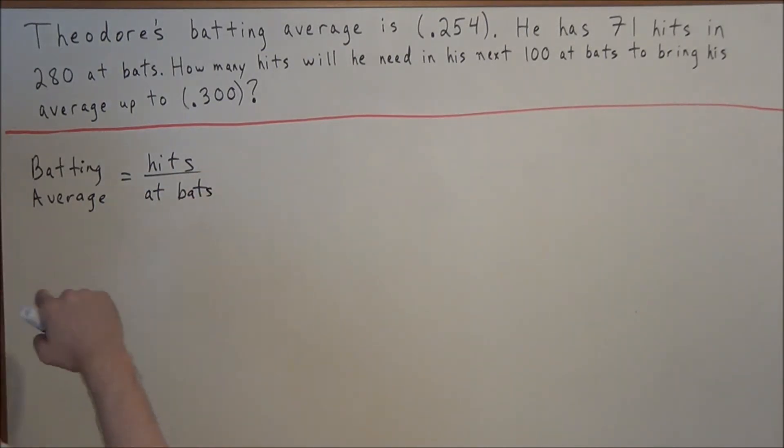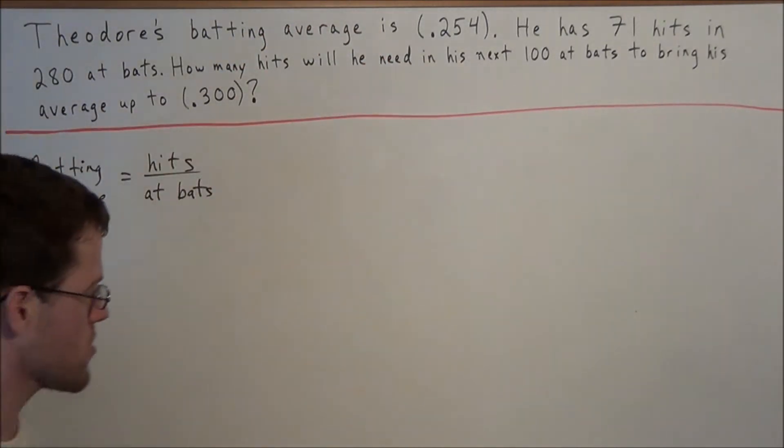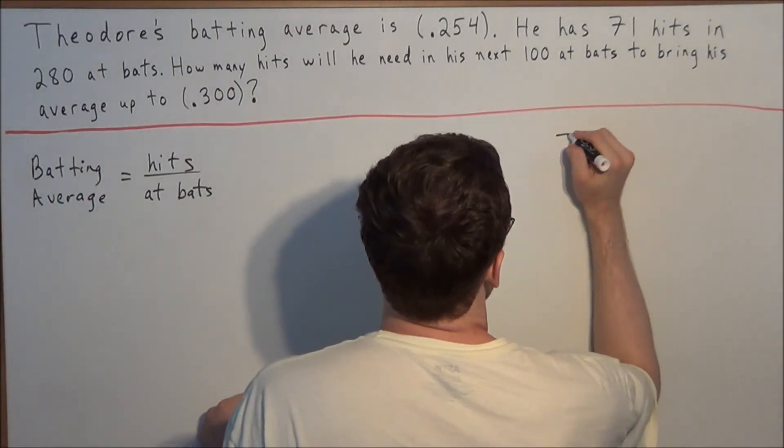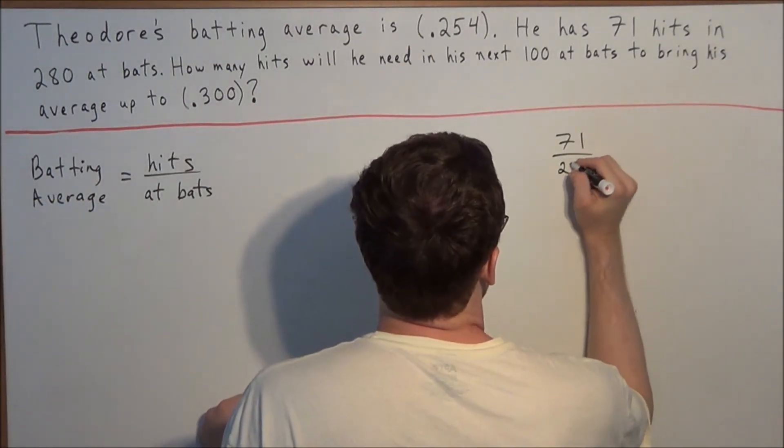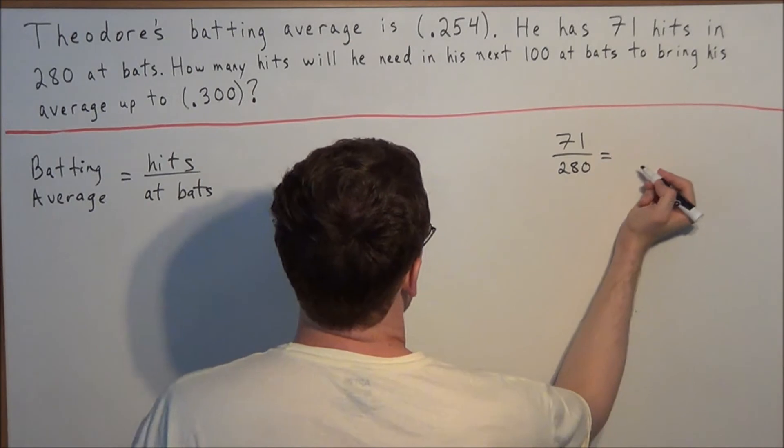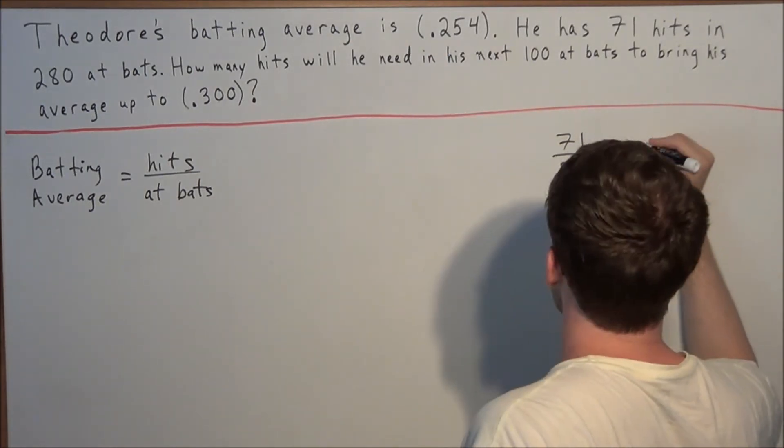If we're trying to find out his batting average, which is given to us, he has a batting average of 254. We know that he has 71 hits and 280 at bats. So for the start of the problem, we have 71 divided by 280, and this is just to see where the batting average comes from.